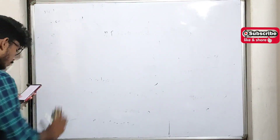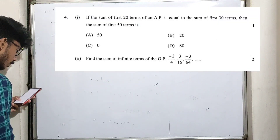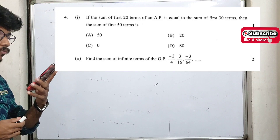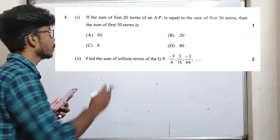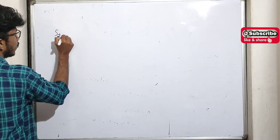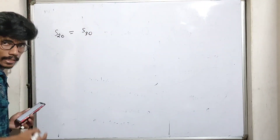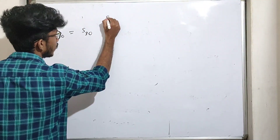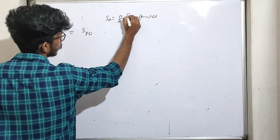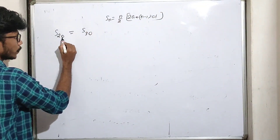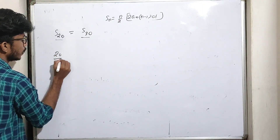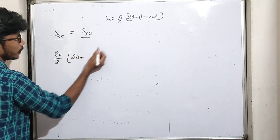If the sum of first 20 terms of an AP equals the sum of first 30 terms, then find the sum of first 50 terms. Given S20 equals S30, we use the formula: sum equals n/2 into (2a + (n−1)d). For n equals 20: S20 equals 20/2 into (2a + 19d).